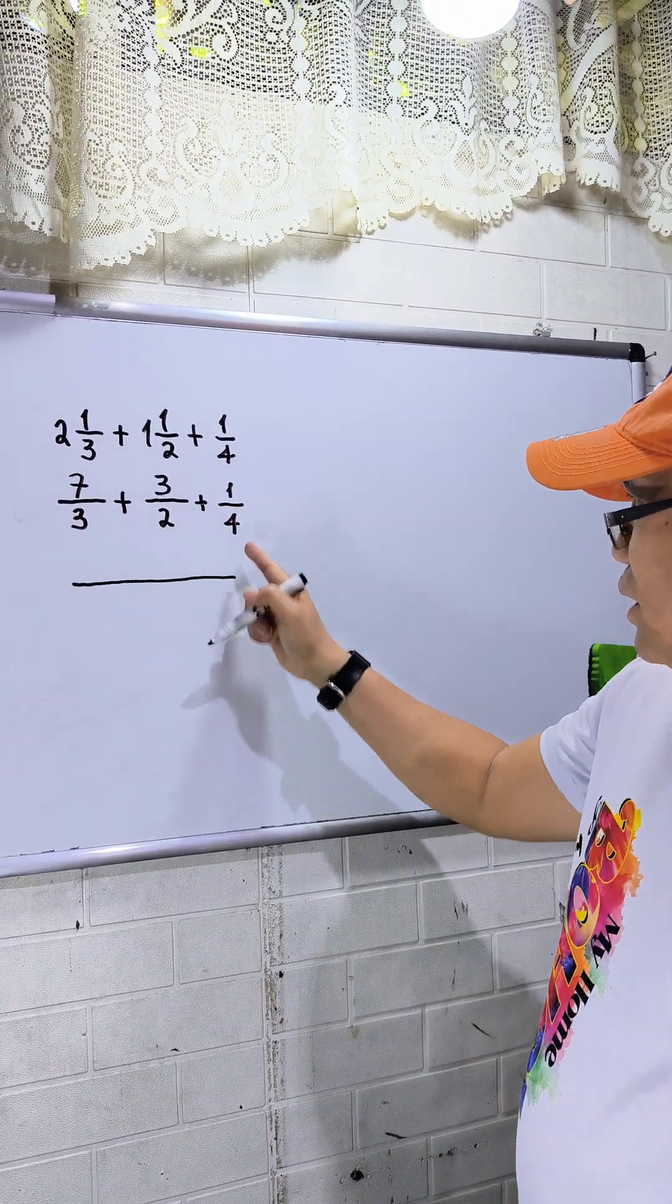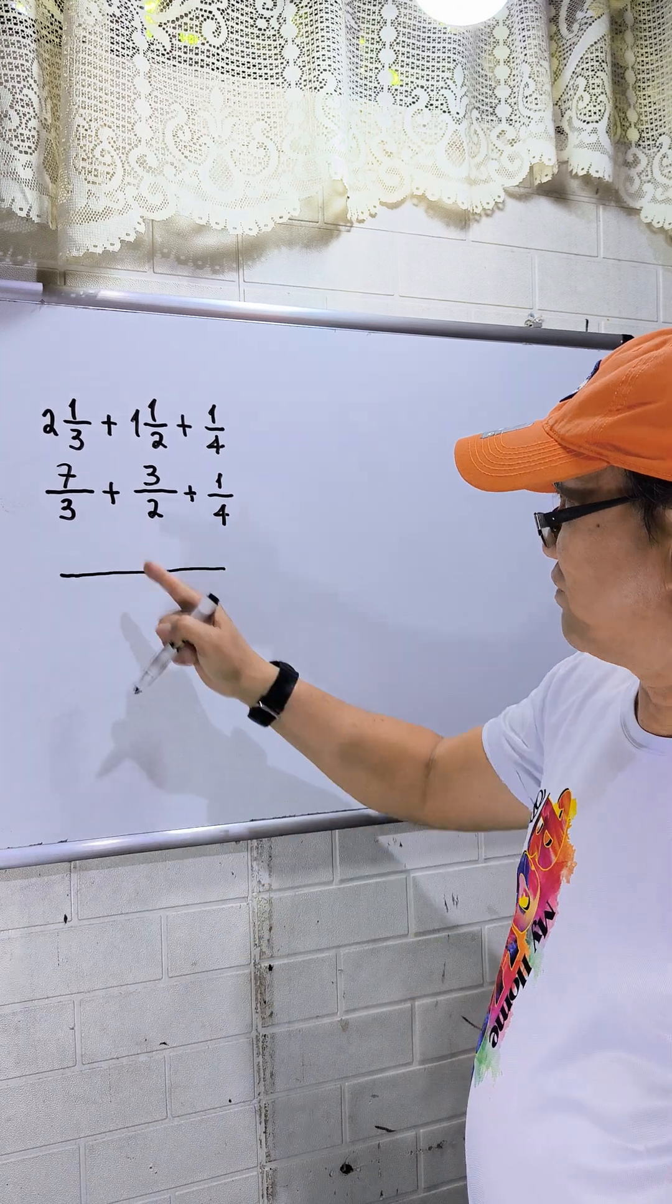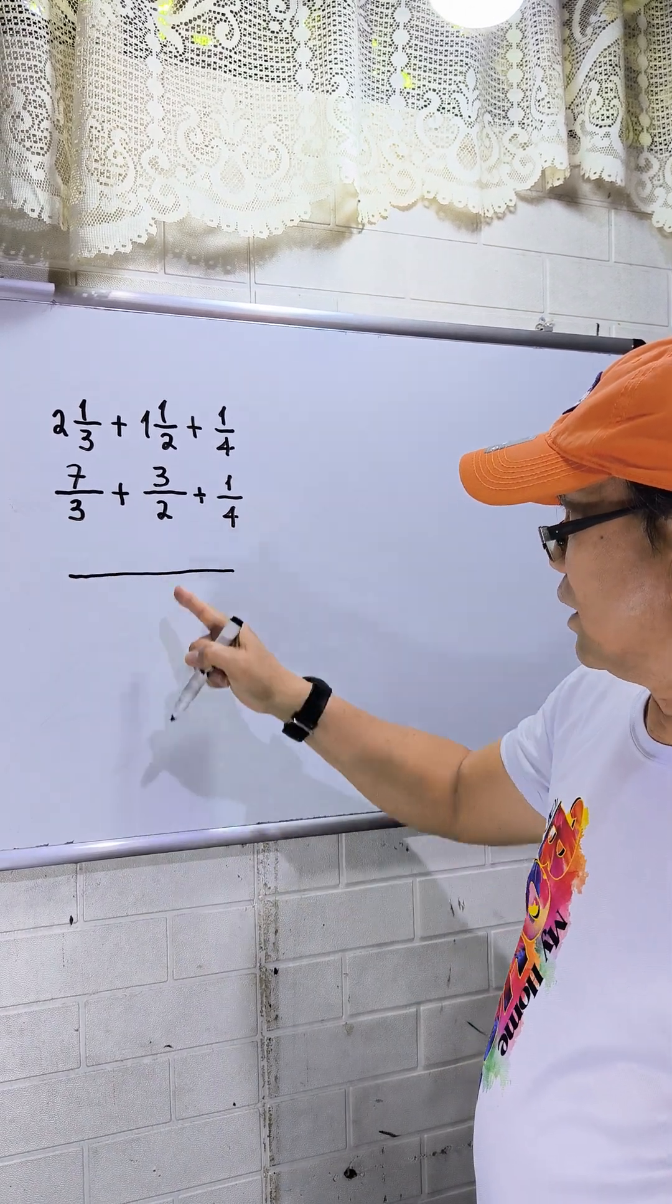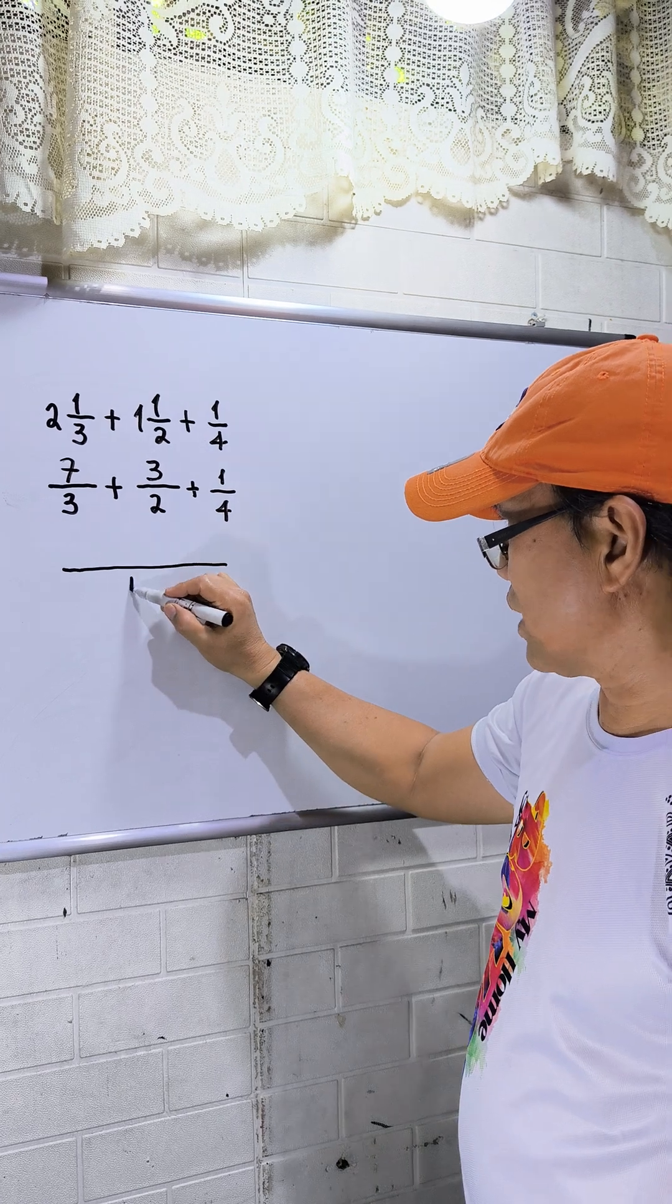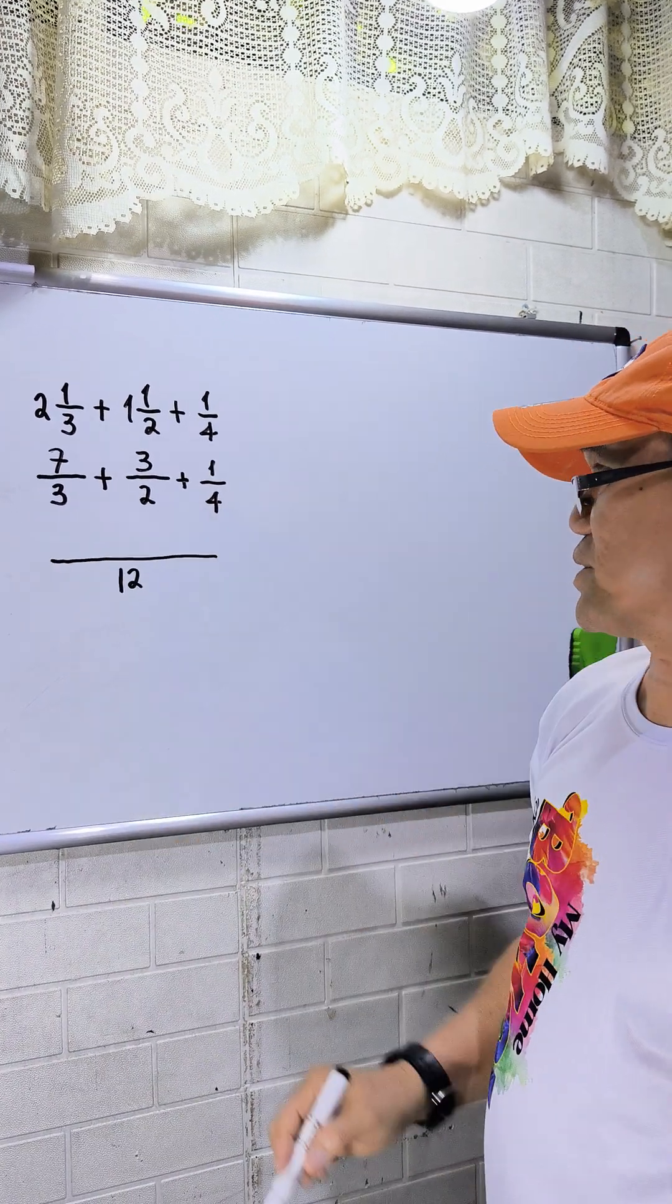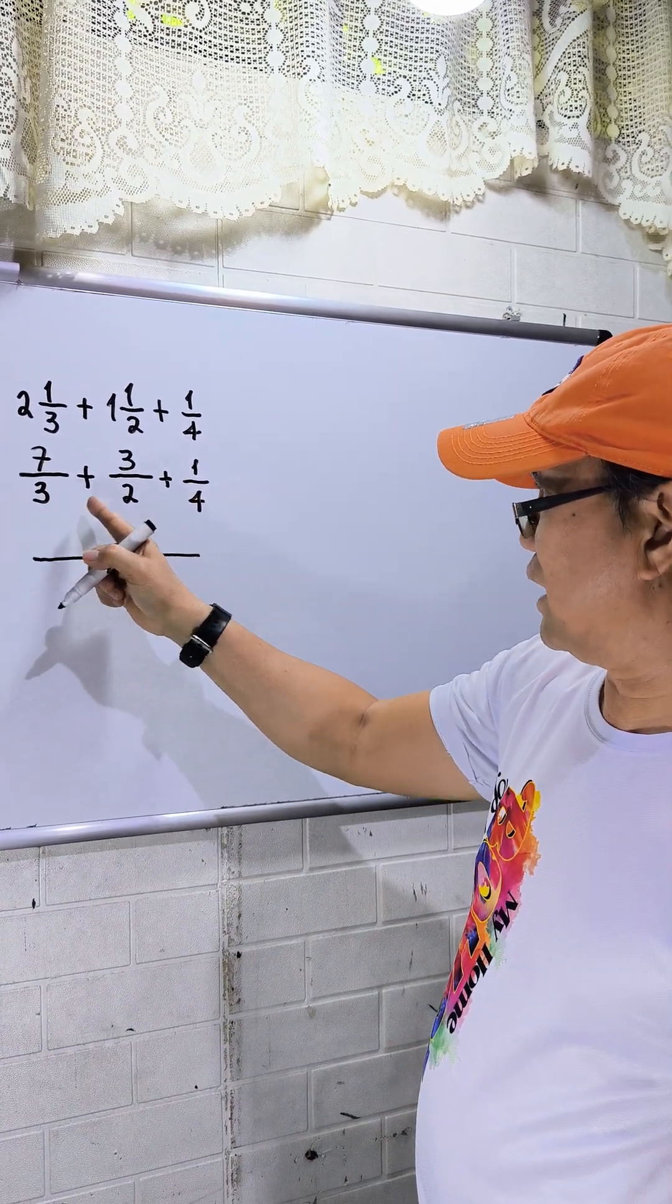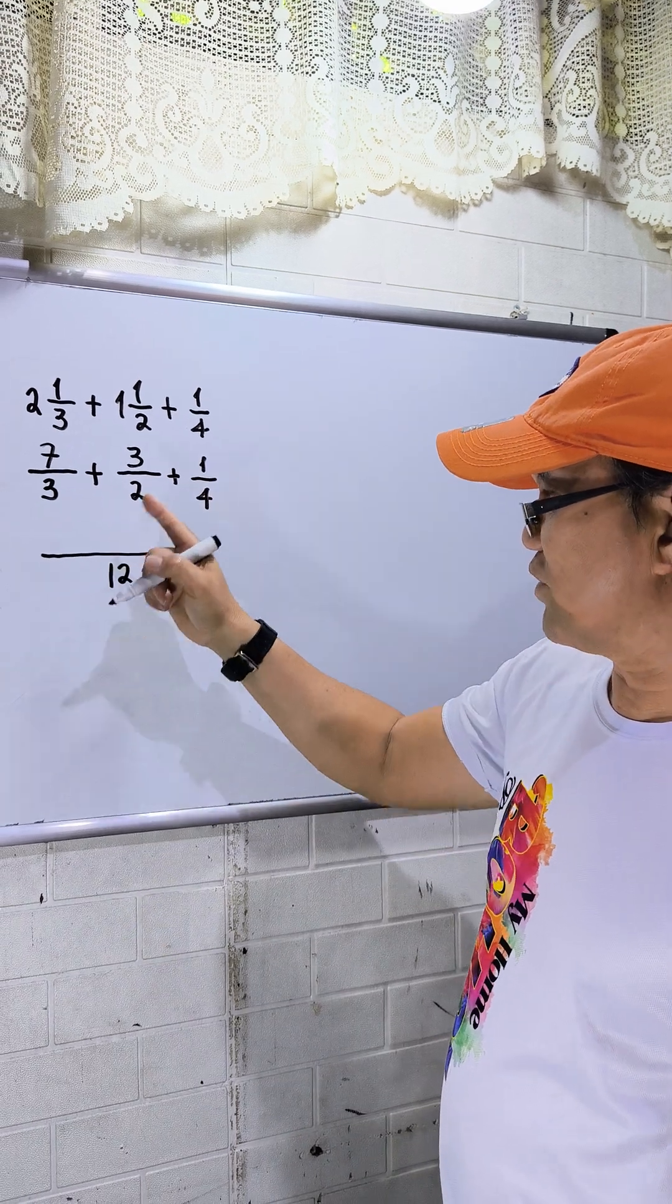Think of a number that can be divided by 3, divided by 2, and divided by 4. This is 12. This is the lowest common denominator. 24 can be divided by 3, but I need only the least common denominator.